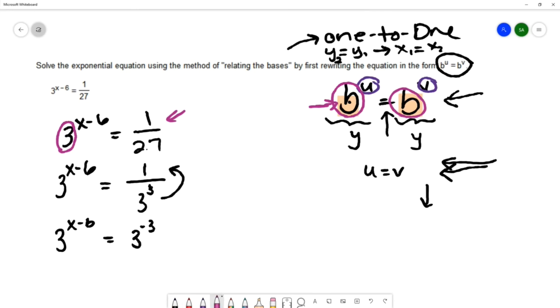So now we've written it so that we have the same base on both sides. And we can use this method of relating the bases, this one-to-one property, and say that these exponents have to be equal to each other. So we have the equation x minus 6 equals negative 3.